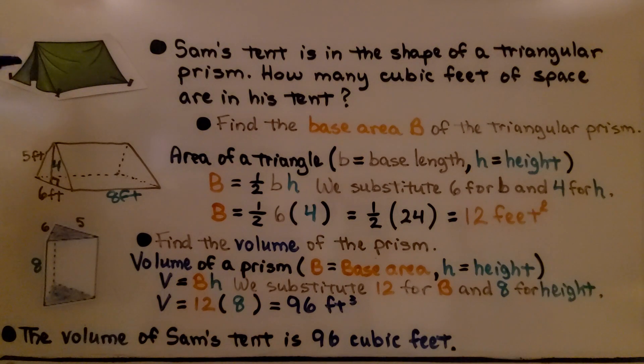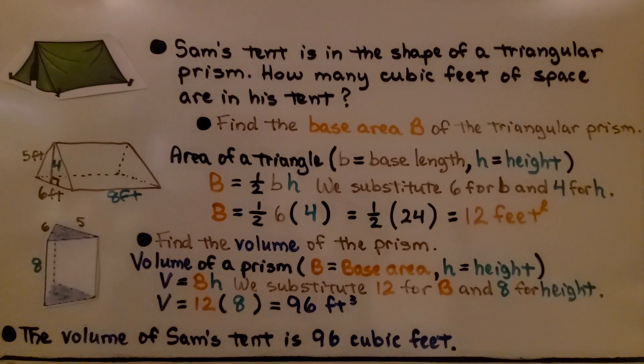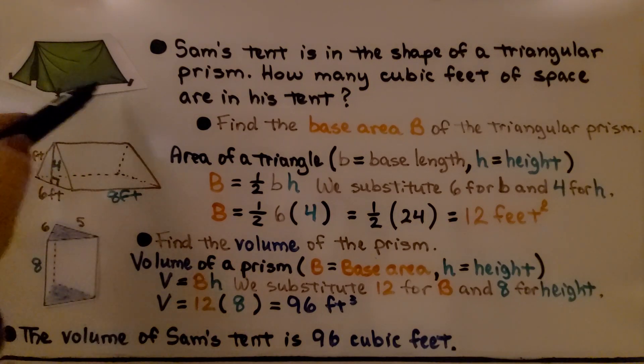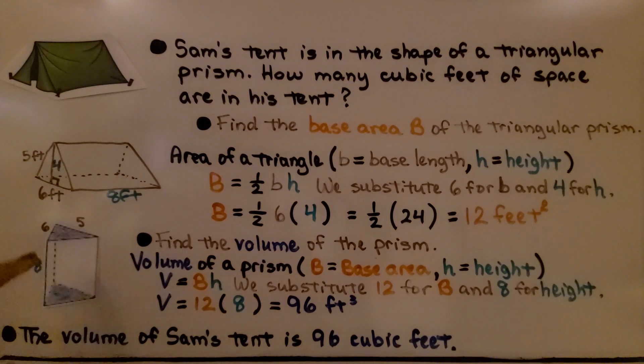Here we have Sam's tent in the shape of a triangular prism. How many cubic feet of space are in his tent? First, we'll find the base area B of the triangular prism. Some of you might think the base is the part sitting on the grass—it's not. We're going to flip it this way because a triangle will be the base. We've got a triangle with a height of 4 and a base of 6 feet.